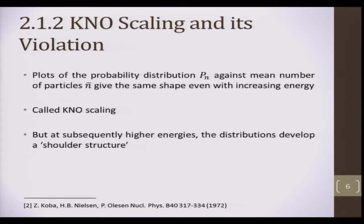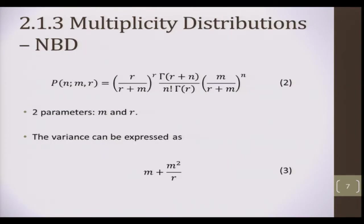But alas, while this was obeyed for low energy collisions, this was not obeyed for high energy collisions. Furthermore, the wider dispersion of high energy multiplicity data meant that the Poisson became inadequate. Instead, the negative binomial distribution, the NBD, had to be used.